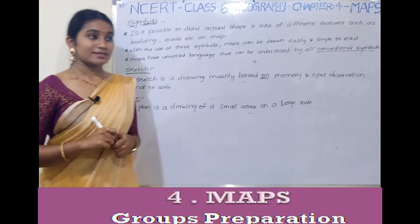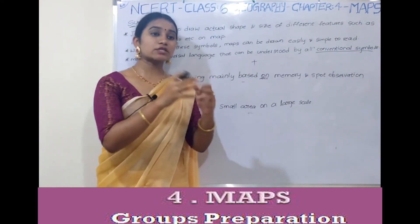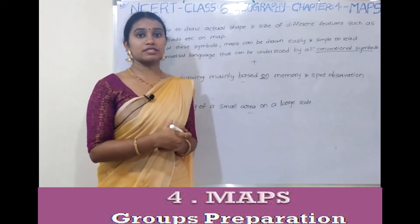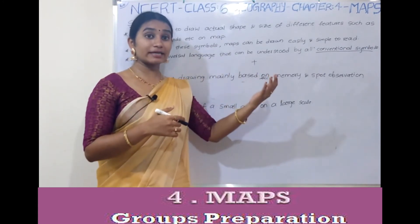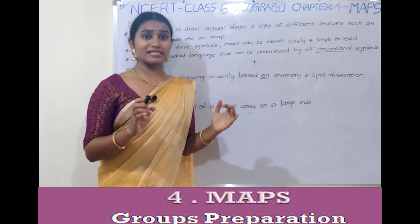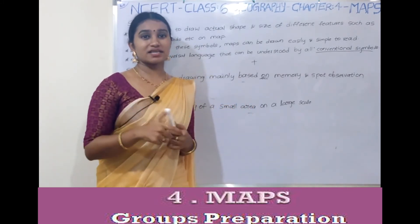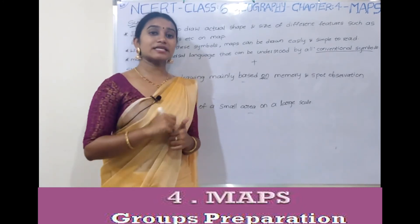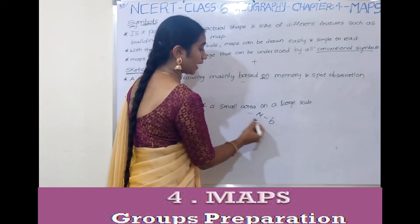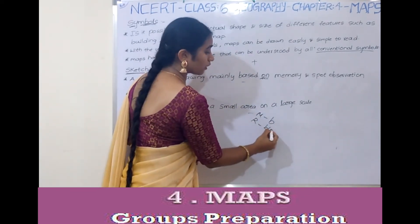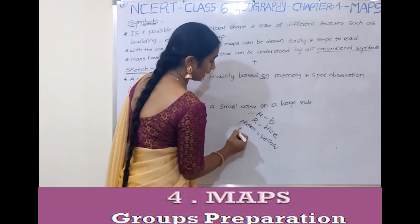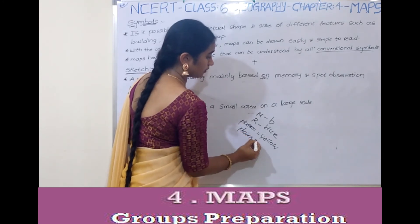The next component is symbols. What are symbols in map components? There are rivers, mountains, plateaus, and plains. You can represent these with symbols. Mountains can be represented in brown color, rivers in blue color, plateaus in yellow color, and plains in green color.